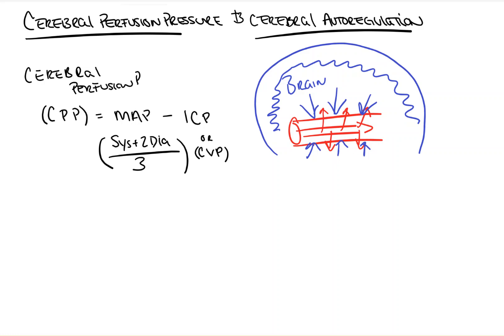So a normal ICP is about 10, so I'll write that here. And a normal MAP can be anywhere from 60 to 160. Meaning that a normal cerebral perfusion pressure, CPP, can be anywhere from about 50 to 150 millimeters of mercury.